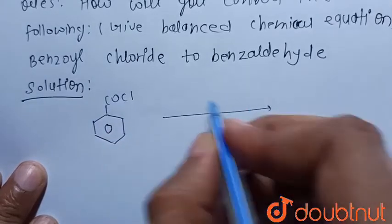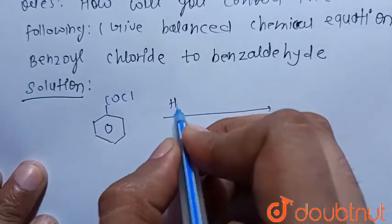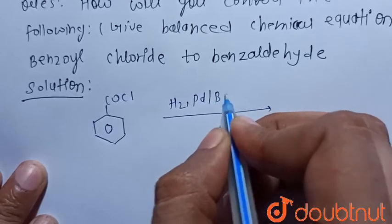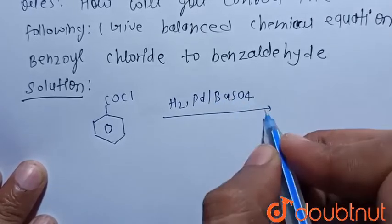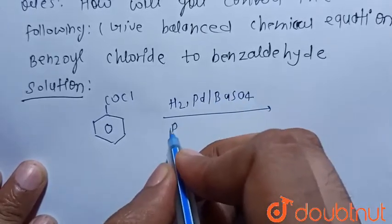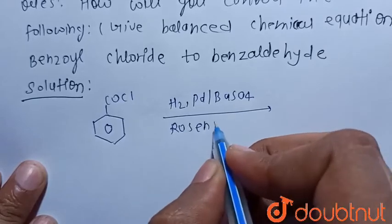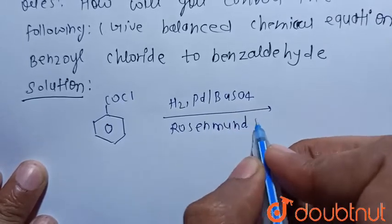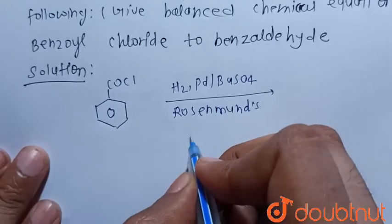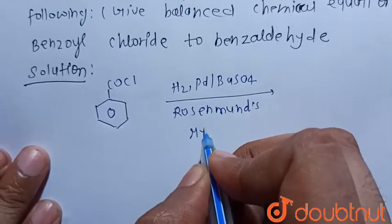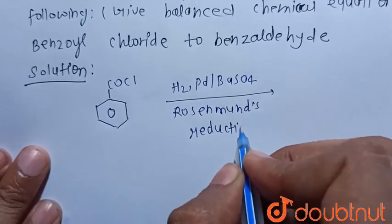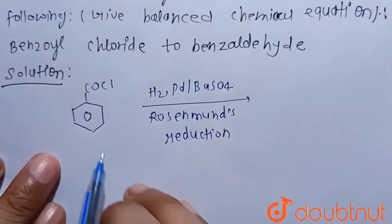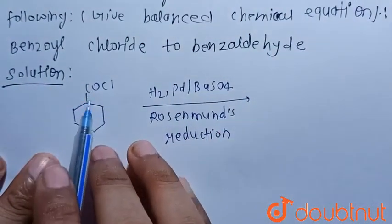When benzoyl chloride is treated with H₂ in the presence of Pd/BaSO₄, this reaction is called Rosenmund reduction, because here reduction of COCl — that is, the benzoyl chloride — occurs.